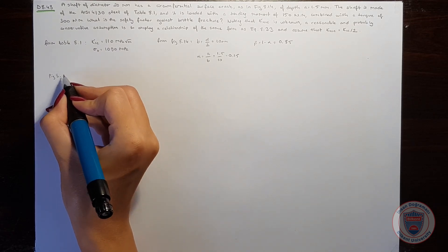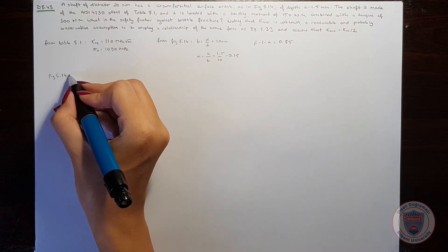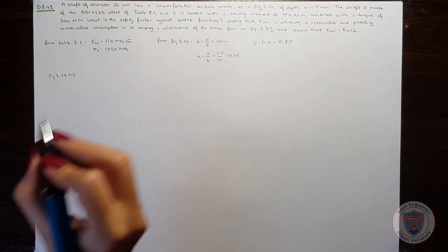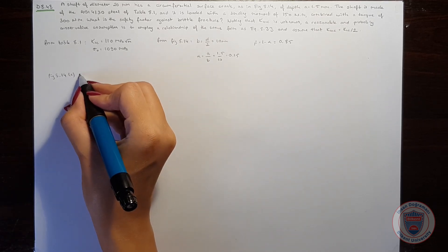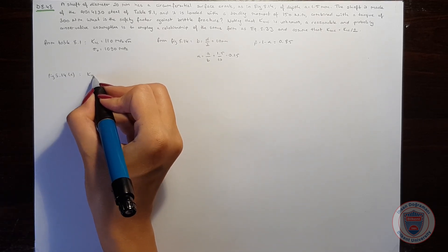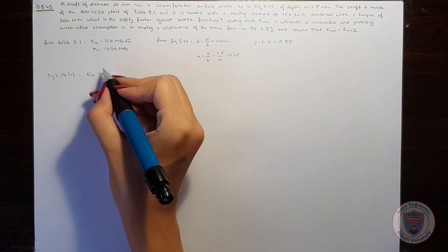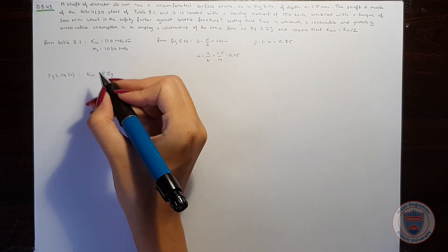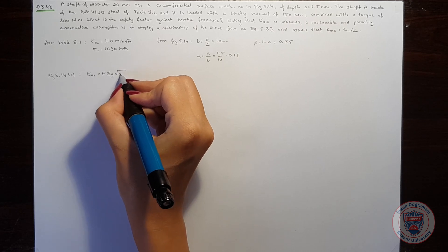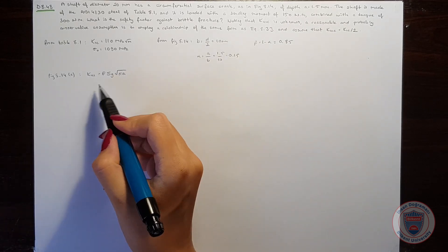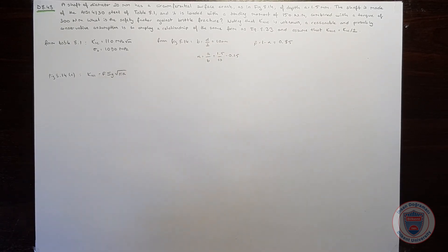From Figure 8.14 part C, we know that K3 equals the form factor times Sg times square root of pi times A. This is the stress intensity factor for torque.